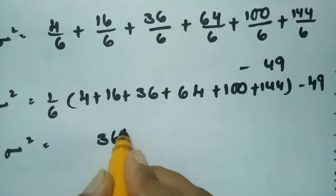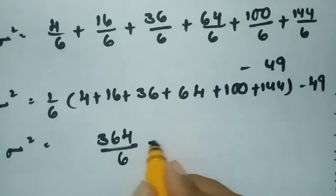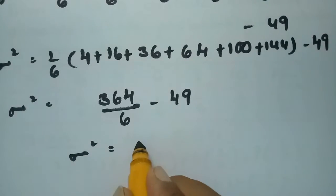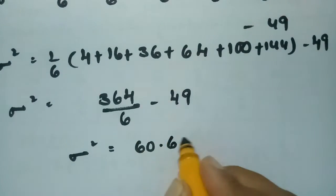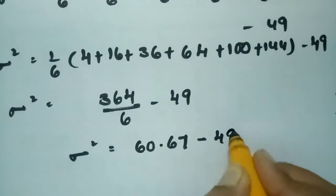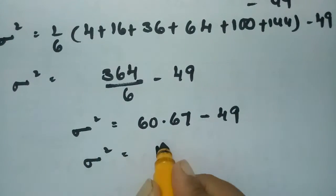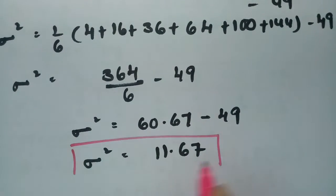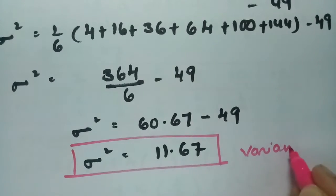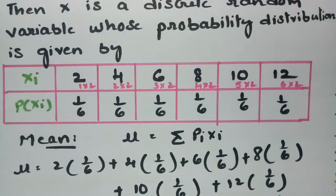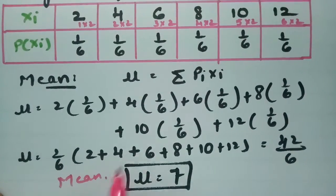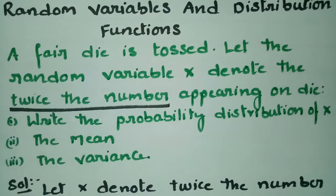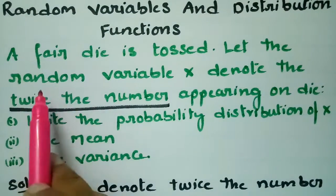σ² = 364/6 − 49 = 60.67 − 49. Therefore, the variance σ² = 11.67. So the mean is 7 and the variance is 11.67, and this completes the probability distribution table.